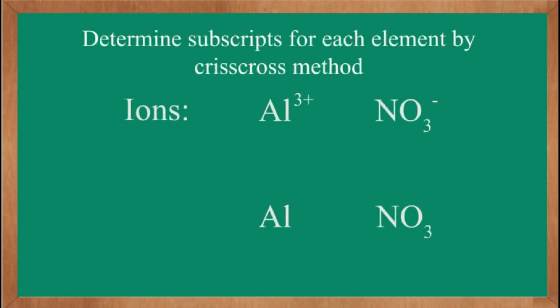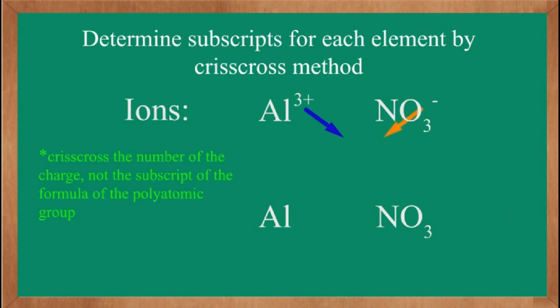Determine subscripts for each element by criss-cross method. Look here, it should be like this. Criss-cross the number of the charge. We have to criss-cross the number of the charge only, not the subscripts.